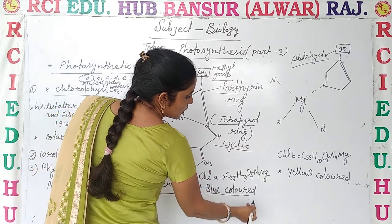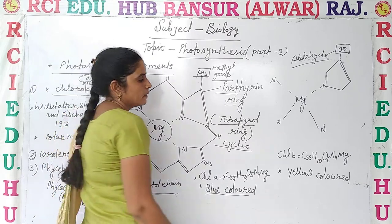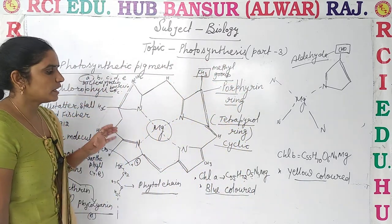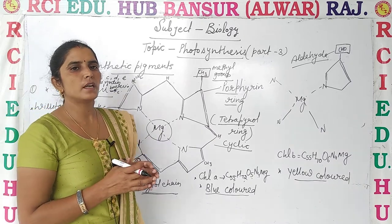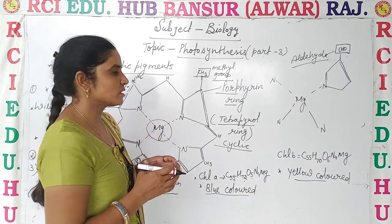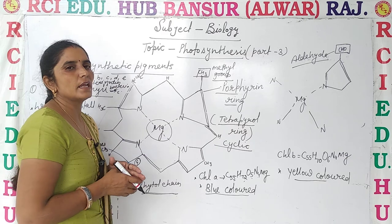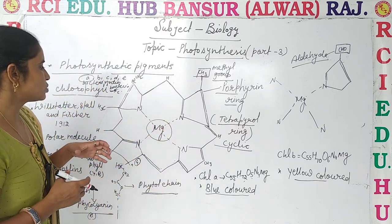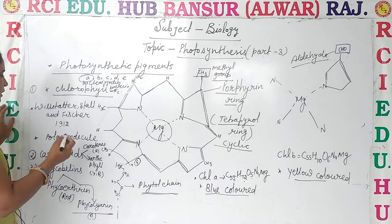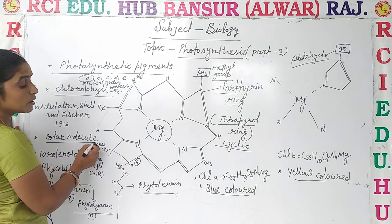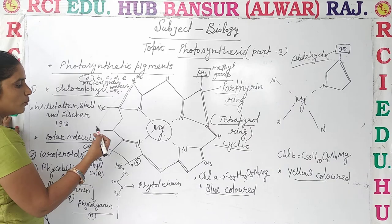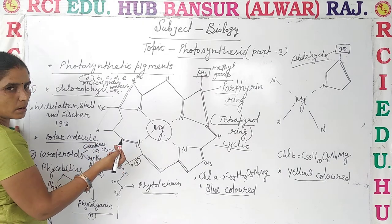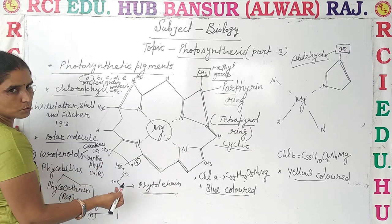Chlorophyll A is blue in color, while chlorophyll B is yellow in color. Chlorophyll A is the universal pigment, whereas chlorophyll B is an accessory pigment. Chlorophyll is a polar molecule. At its center, magnesium is present; it has tetrapyrrole rings and a phytol chain.